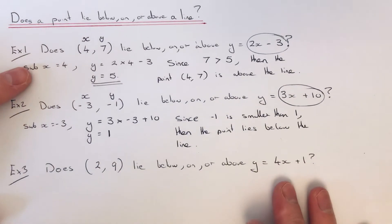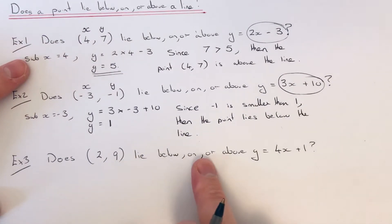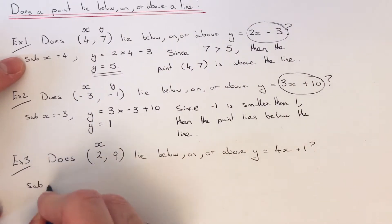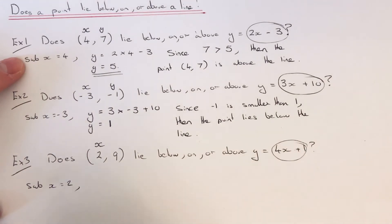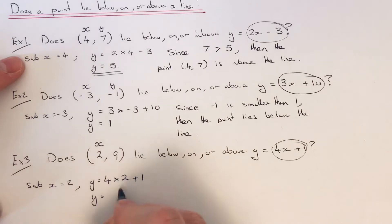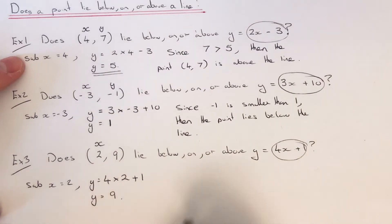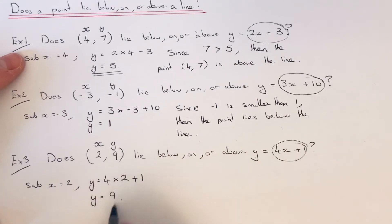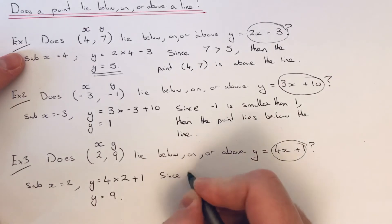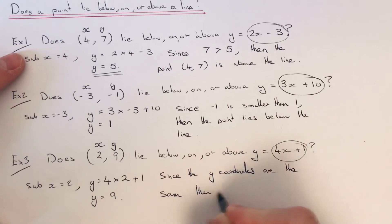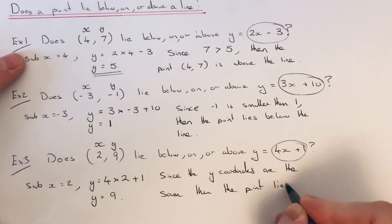Final example: does the point 2, 9 lie below, on or above the line y equals 4x plus 1? If we look at our x coordinate, which is 2, and sub x equals 2 into our equation for the line, the y coordinate on the line would be 4 times 2 plus 1. So 4 times 2 is 8, add 1 is 9. The y coordinate on the straight line has come out the same as the coordinate point, so this point lies exactly on the line. Since the y coordinates are the same, the point lies on the line.